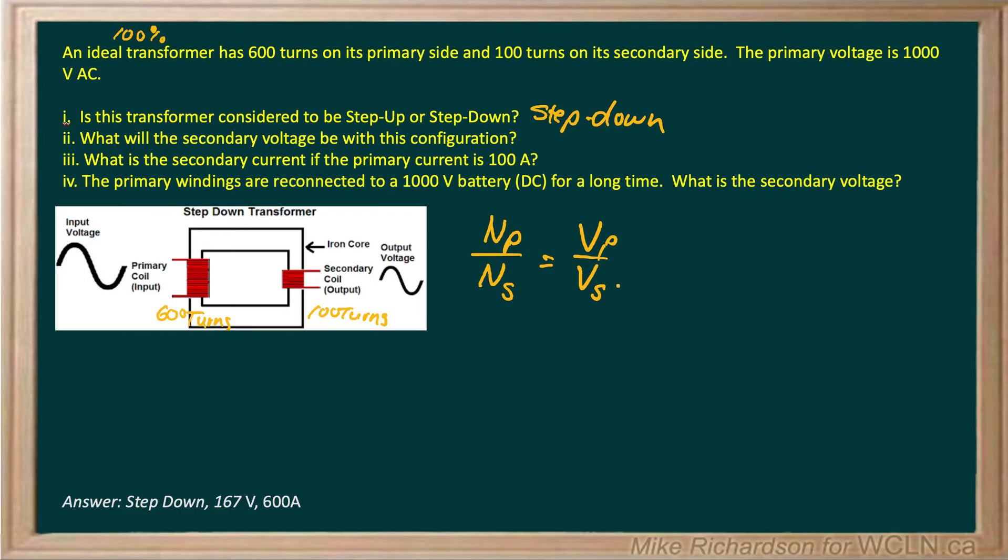We want to solve for Vs. So we can multiply both sides by Vs to get it on top. And then once we have that we can multiply by Ns and divide by Np and we get an equation that looks like this. My secondary voltage is Vp times Ns all over Np.